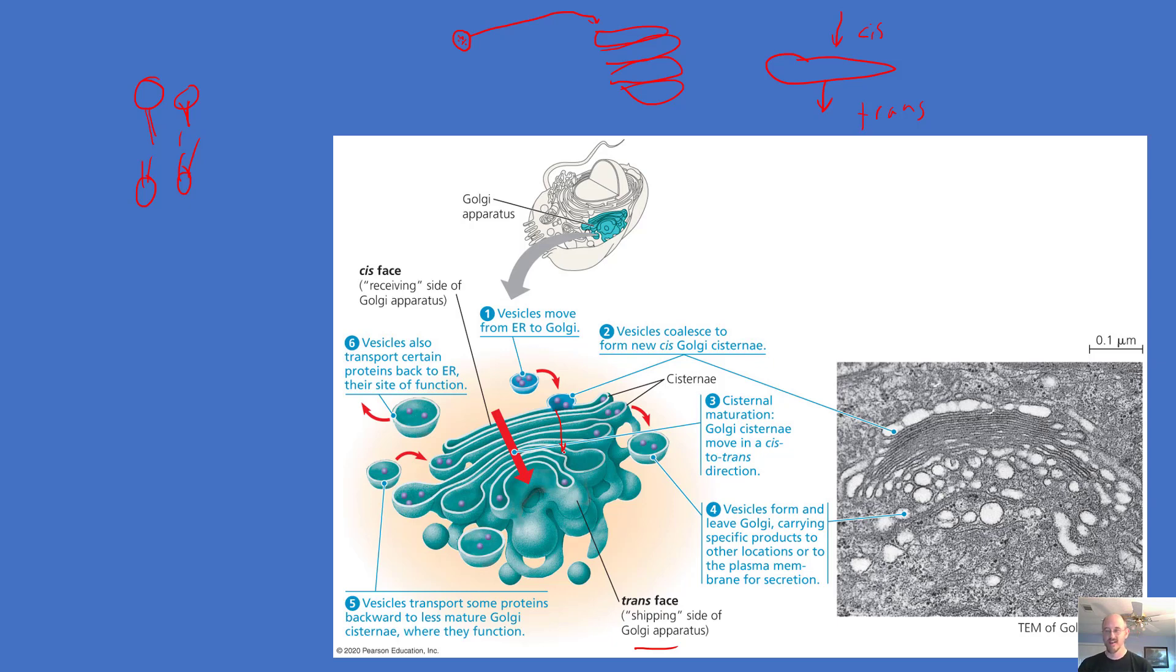So the Golgi apparatus is kind of like UPS, it's a shipping center, but it also can modify things. And then the finished product bubbles off in a transport vesicle and leaves the Golgi apparatus, and it might go off to a number of places.